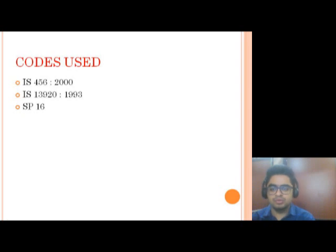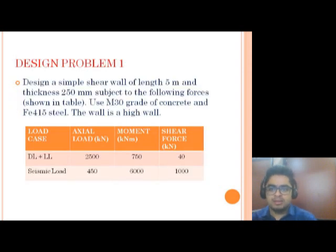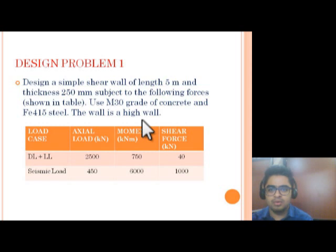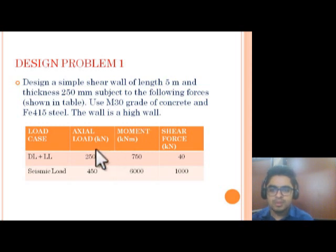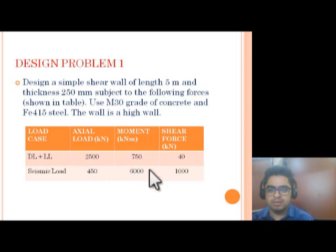For this design example we will use three codes: IS 456-2000, IS 13920-1993, and SP16. The problem: design a simple shear wall of length 5 meters, thickness 250 mm, subjected to dead load, live load, and seismic load. It is a high wall. Grade of concrete is M30 and grade of steel is Fe415. The axial load for dead load plus live load (gravity load) is 2500 kN. Seismic load is 450 kN. Moments are 750 and 6000 kN·m. Shear force is 40 and 1000 kN.